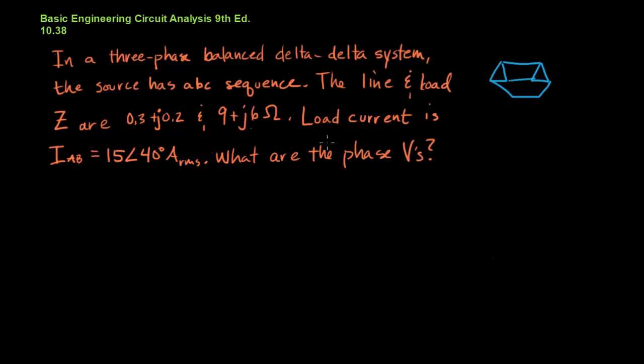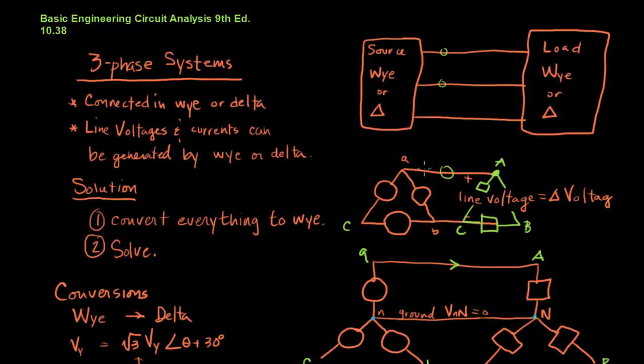And then we're given a load current. Notice that the load current is called a load current, which means it's the current across a delta load. But it's also further labeled I_AB. If you go back to the graphic here, we're talking about capital A-B. We're talking about a current across a load. So if I were to convert that load into a Y-load, do you think that the current is going to be the same?